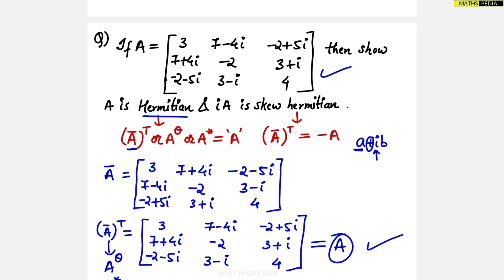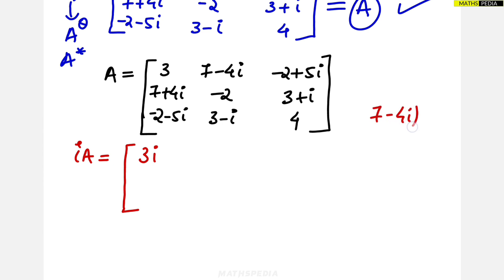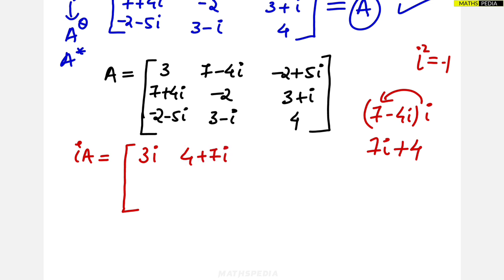Now let us prove that i·A is a skew-Hermitian matrix. i·A means we multiply every element by i. For example, 3×i = 3i. For 7−4i multiplied by i: we get 7i − 4i² = 7i + 4, which is written as 4+7i, since i² = −1.